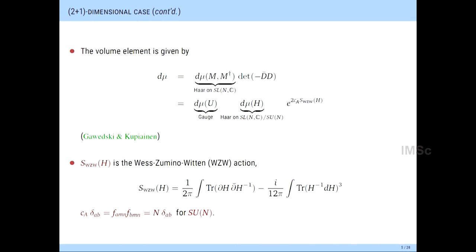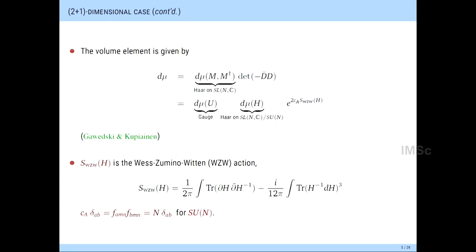The Haar measure on SL(N,C) can be factorized exactly — the unitary part can be factored out, there is a coset part, and the determinant in two dimensions can be calculated exactly as the exponential of the Wess-Zumino-Witten action, where C_A is the adjoint Casimir for the group. This exact expression is known and goes back to work by Gawędzki and Kupiainen. The WZW action has a standard form with a three-form and a two-form metric-dependent kinetic term. Crucially, C_A is zero in the abelian case — this is the point of departure between abelian and non-abelian theory.